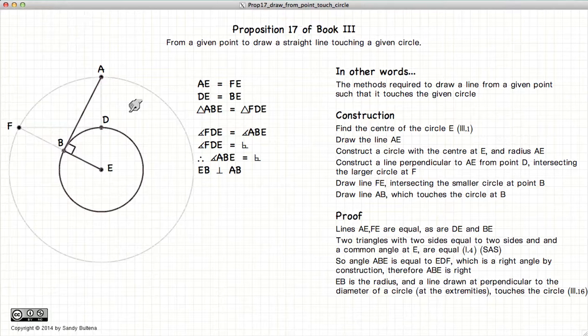And according to Proposition 16 of Book 3, if we have a diagonal or a radius with a line that is perpendicular to its endpoint, then that line just touches the circle. So hence AB touches this circle.